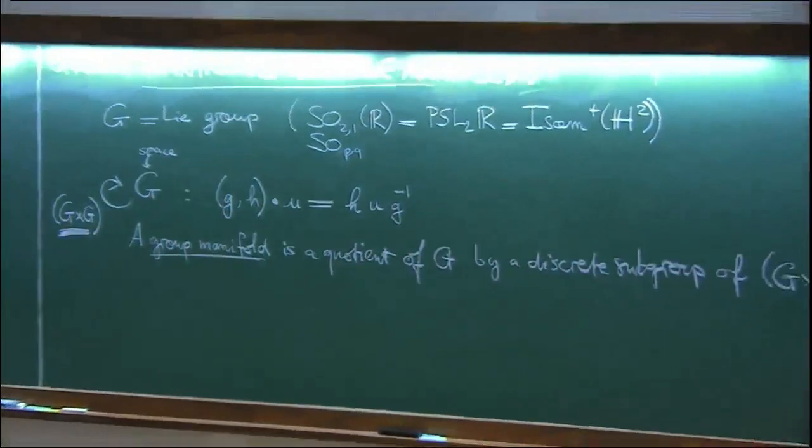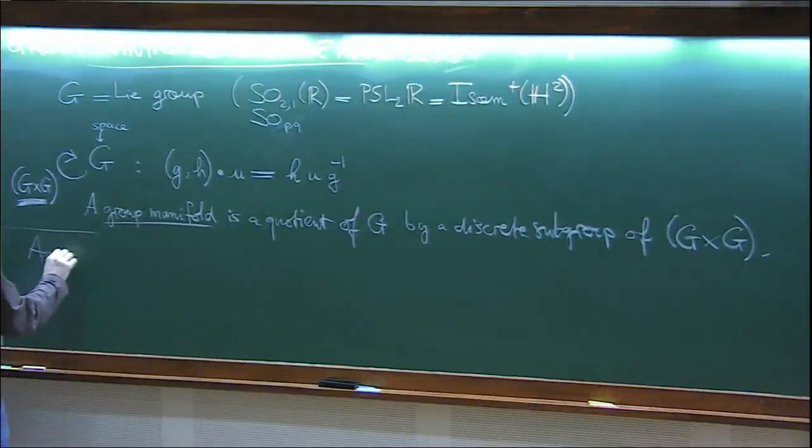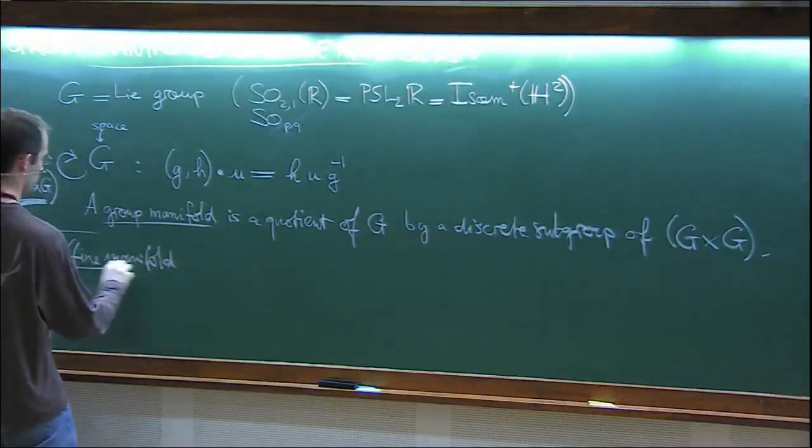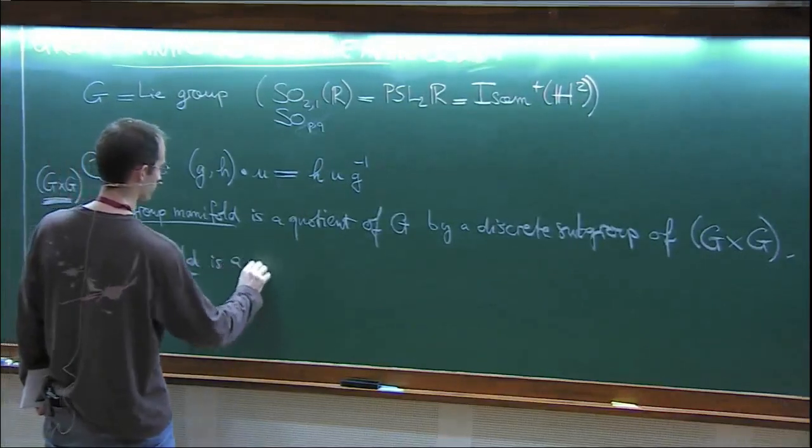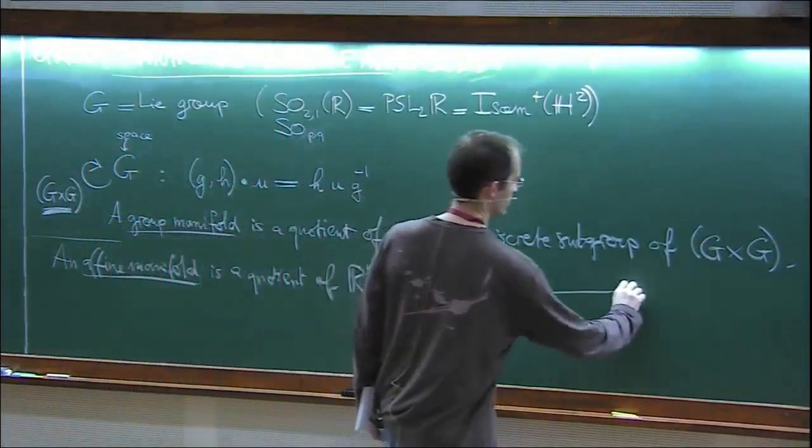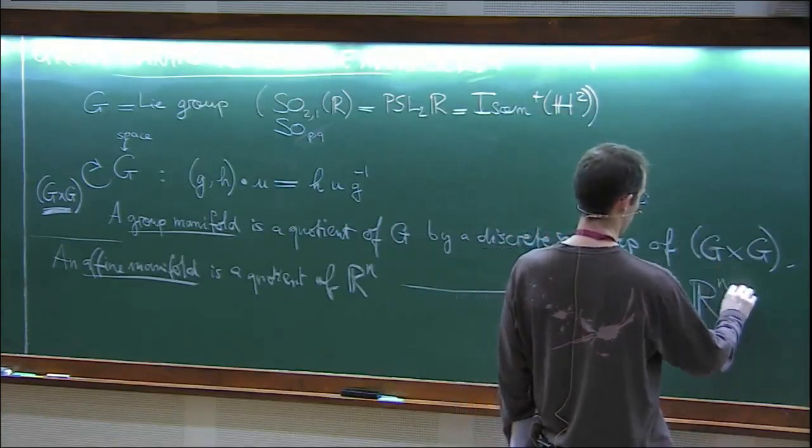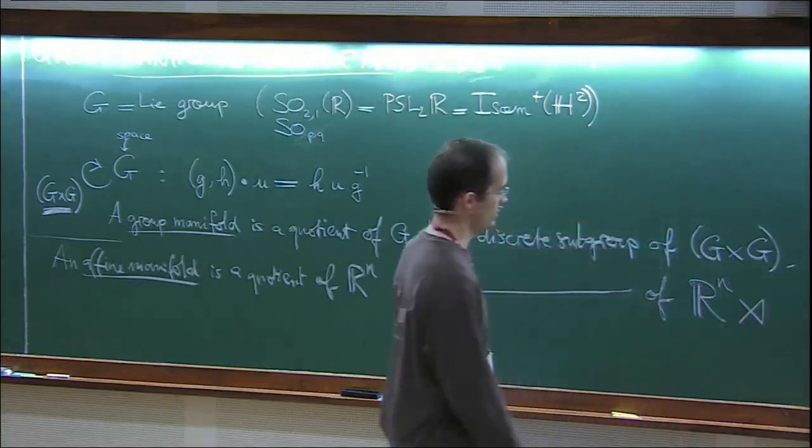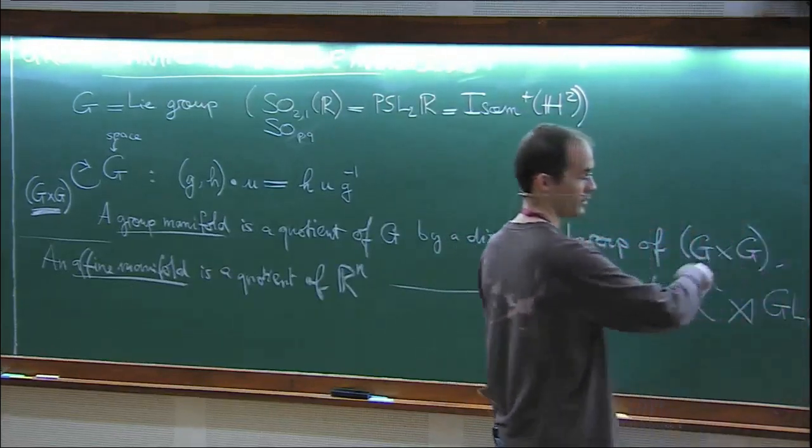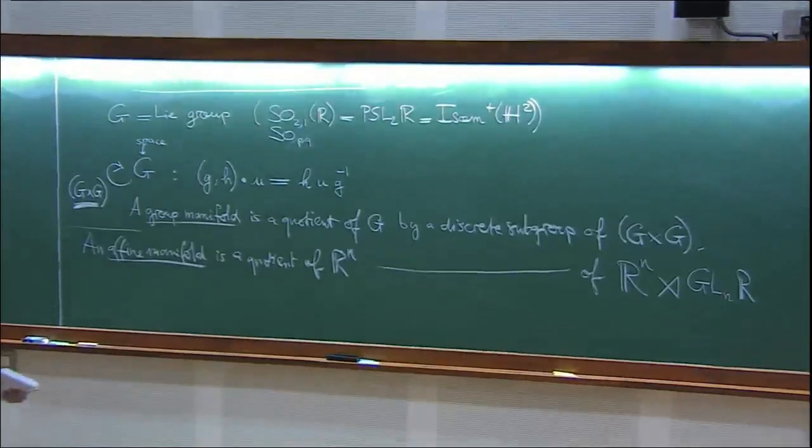I will also be talking about affine manifolds and the relationship between the two. An affine manifold is just a quotient of R^n by a discrete subgroup of the affine transformations. That's a group of translations R^n, semi-direct product with GLn. I can act linearly on R^n, but I can also act by translations, and together these generate the so-called affine group.